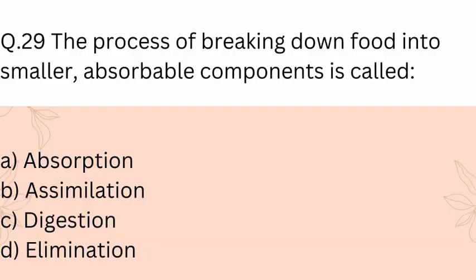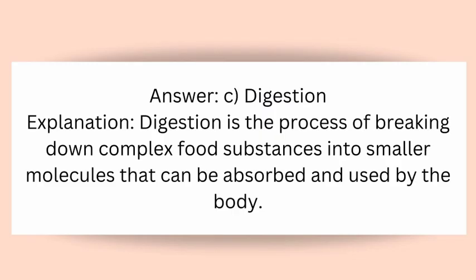Question 29: The process of breaking down food into smaller absorbable components is called? A) Absorption, B) Assimilation, C) Digestion, D) Elimination. Answer: C) Digestion. Explanation: Digestion is the process of breaking down complex food substances into smaller molecules that can be absorbed and used by the body.